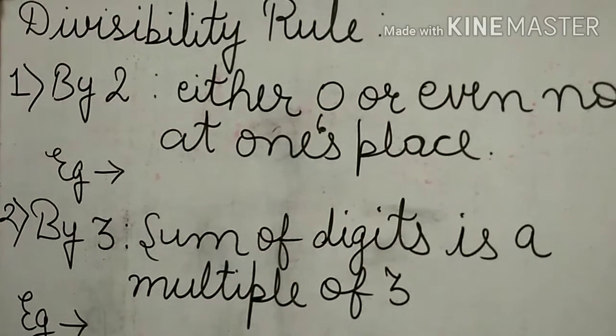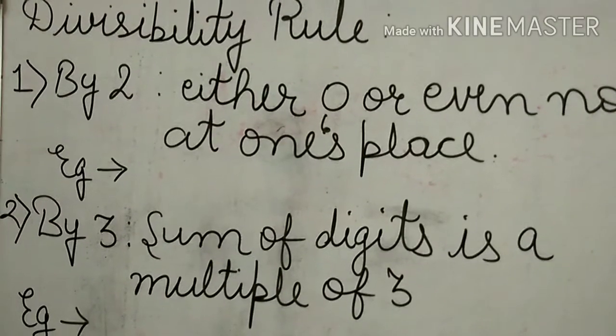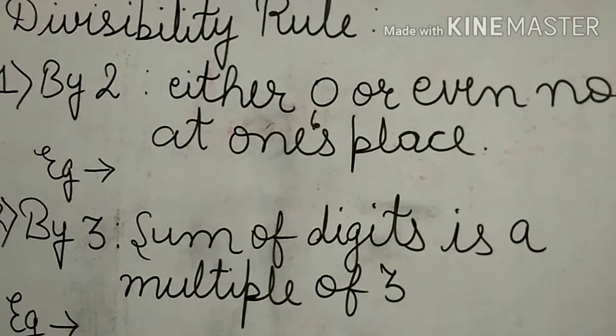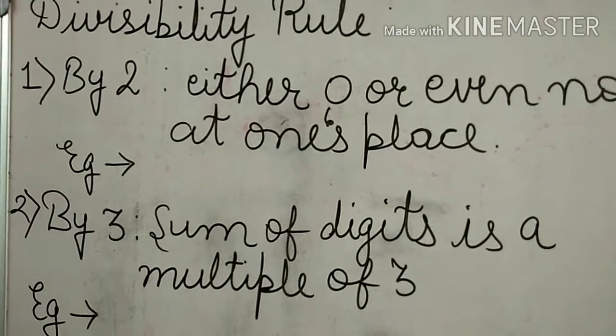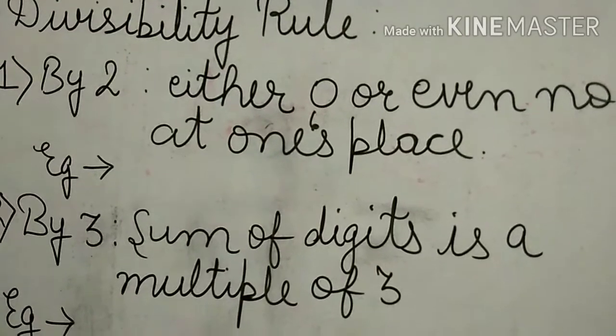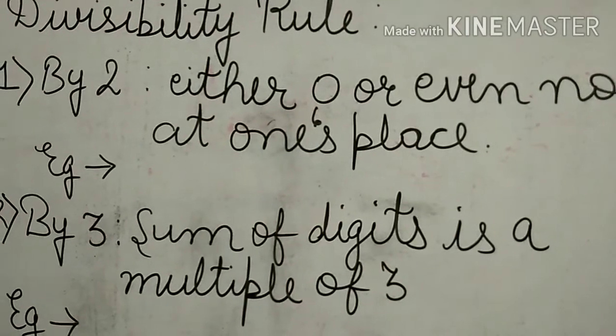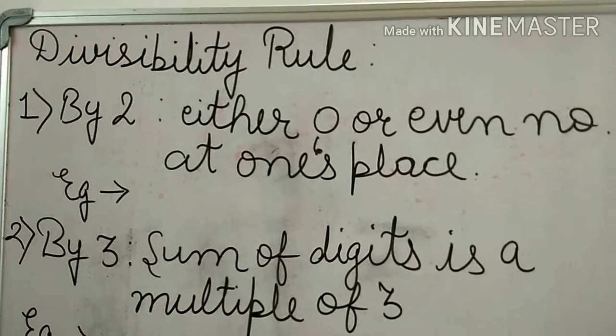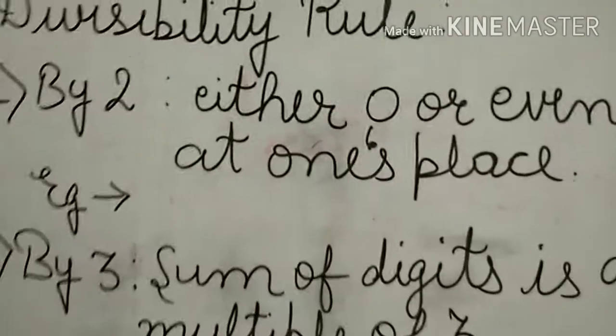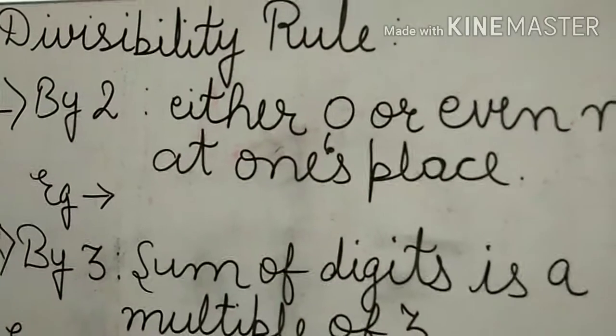come up with a video on divisibility rules. This means how do we know if a number is divisible by two, three, four, five, and so on. Today we will learn how to identify whether a large digit number is completely divisible by two, three, or other numbers.